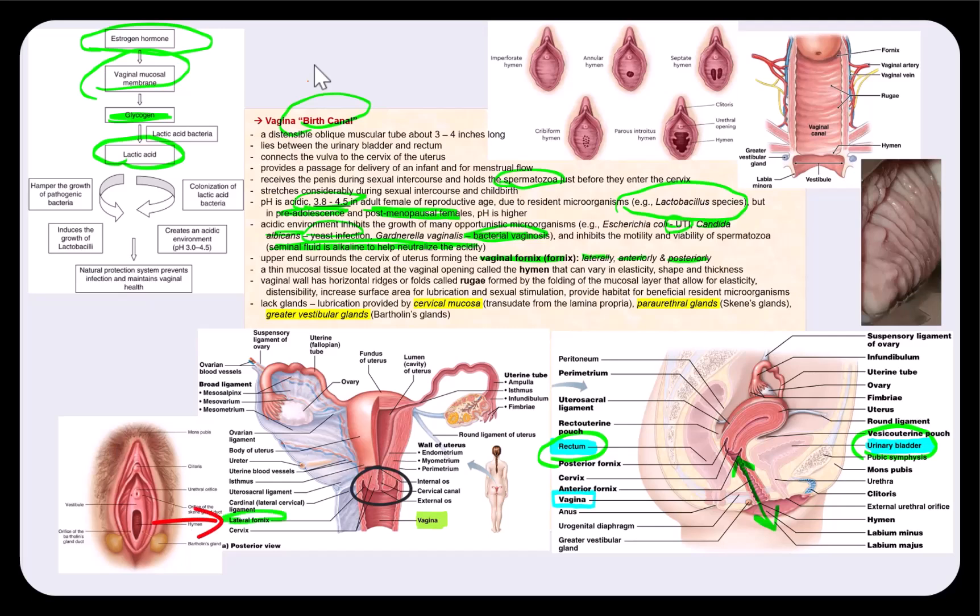and posteriorly. And this is why sometimes the fornix can be referred to as the lateral fornix. If we're looking at the coronal section, as you see over here, it can be referred to as the anterior-posterior fornix if we're looking at a sagittal section, as you see over here. So here's the posterior fornix, and here is the anterior fornix.